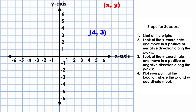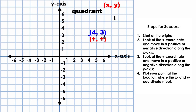You might have already noticed that the coordinate plane is divided into four sections. Each of these sections is called a quadrant. The first quadrant is identified using the Roman numeral I. Every point located in the first quadrant has a positive x-coordinate and a positive y-coordinate, just as we saw with our example. The remaining quadrants are numbered moving in a counterclockwise direction about the origin.